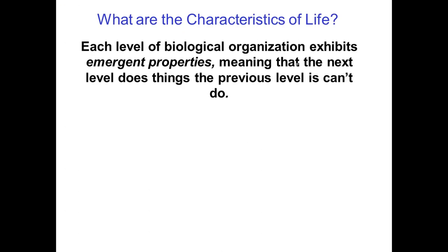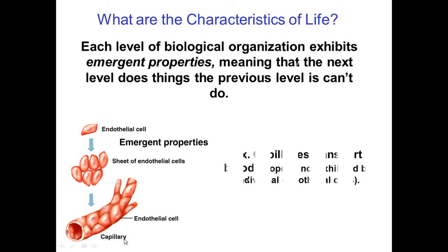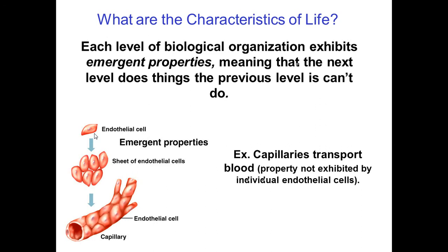Each level of organization exhibits emergent properties, meaning the level above can do things that the previous level cannot do. For example, inside your body you have endothelial cells — generic little cells. If you combine those together you get a sheet of endothelial cells, and if you wrap that sheet into a tube-like structure, you get a capillary. A capillary can transport blood. However, a single endothelial cell cannot do that — it has to be in combination with other cells in order to transport blood or make the tube that blood flows through.